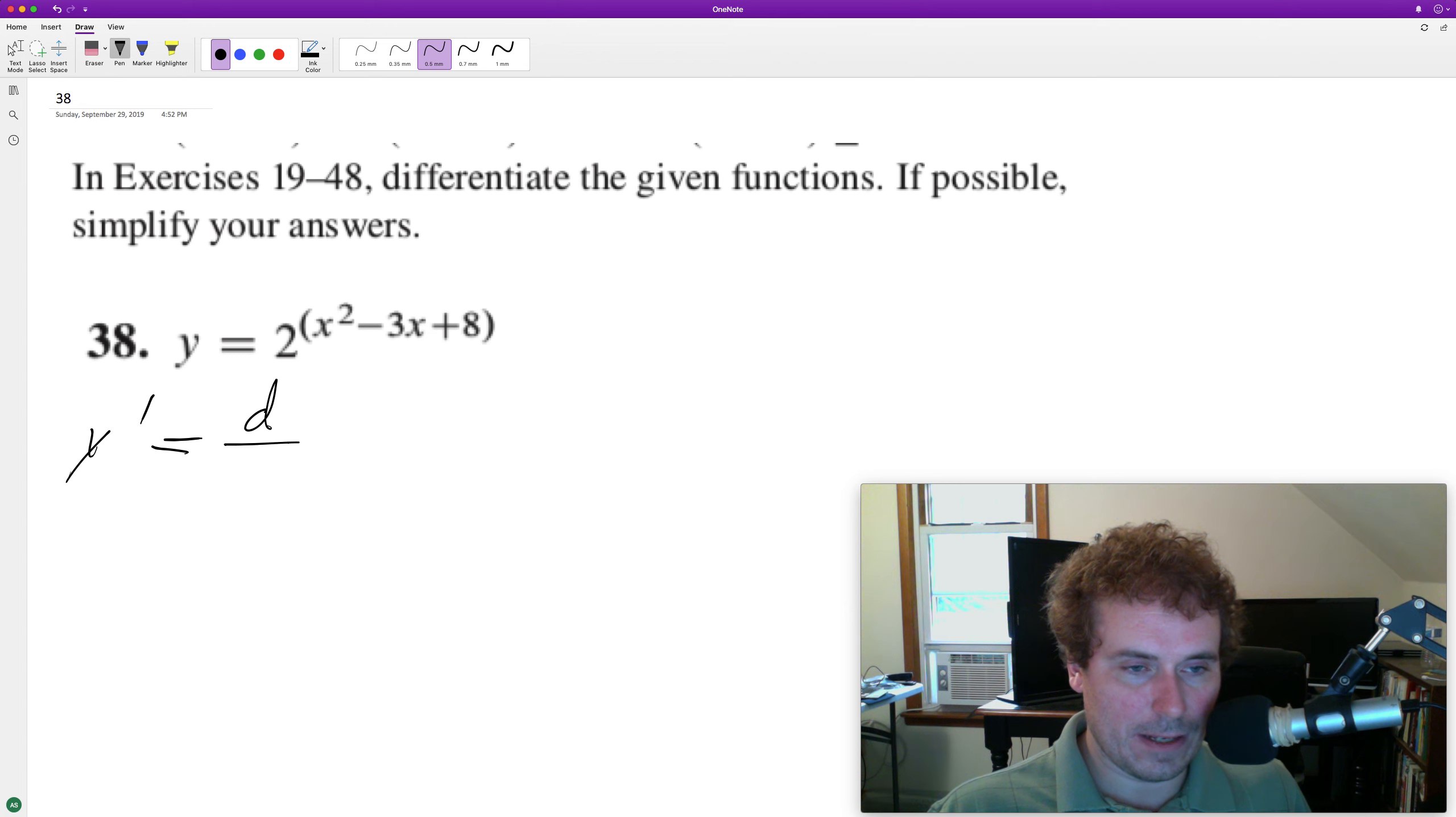So in this case, x squared minus 3x plus 8, and then we get the natural log of 2, and then all this times 2 raised to the x squared minus 3x plus 8.